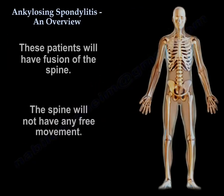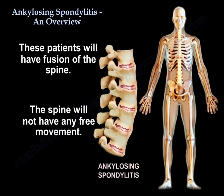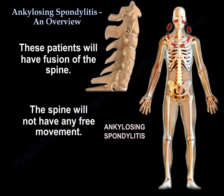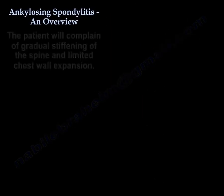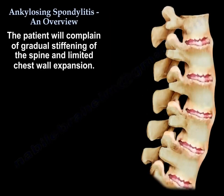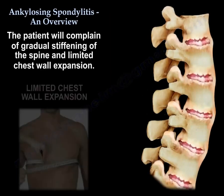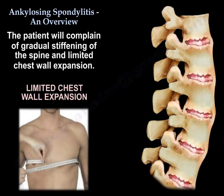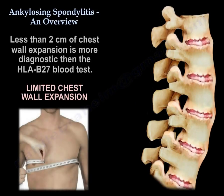These patients will experience fusion of the spine with no free movement. They will complain of gradual stiffening of the spine and limited chest wall expansion. Less than two centimeters of chest wall expansion is actually more diagnostic than a positive HLA-B27.